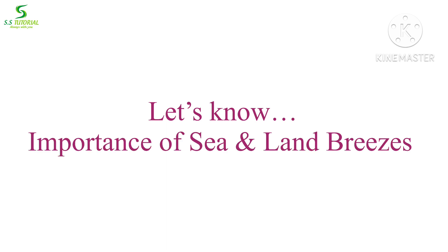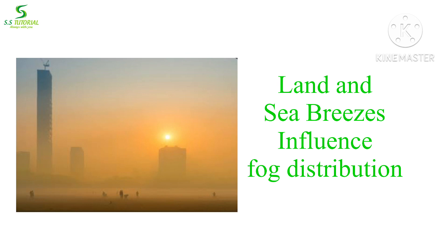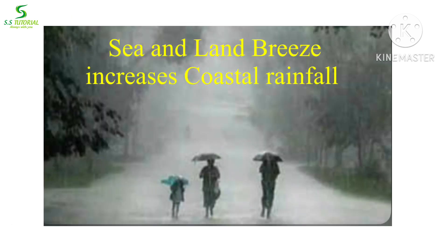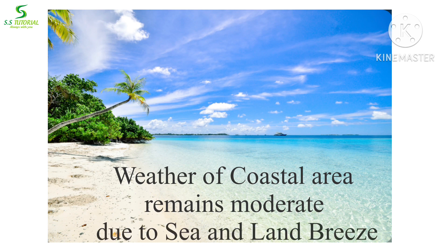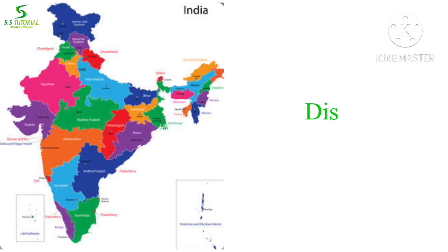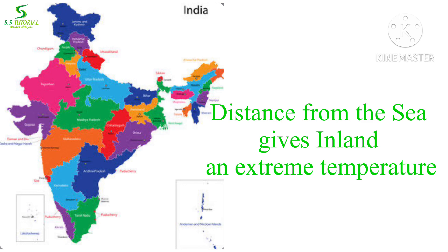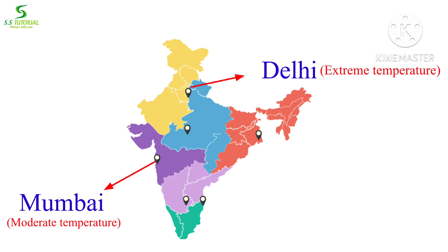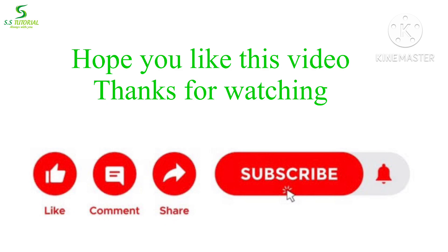Land and sea breezes are very important to us. Their pattern can influence fog distribution. These winds result in elevated humidity. Due to land and sea breezes, coastal areas receive high precipitation and experience moderate temperatures. In contrast, inland areas located at a greater distance from the sea lack this influence and experience extreme temperatures. The influence of land and sea breezes can be felt up to 100 miles inland. This is why Mumbai has moderate temperature while Delhi has extreme temperature.